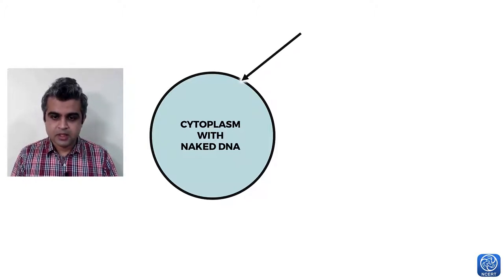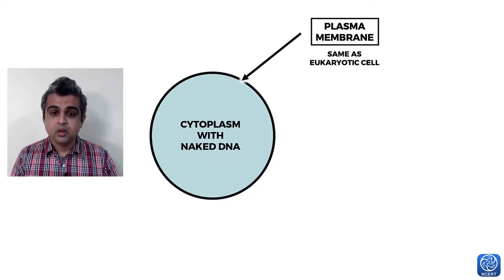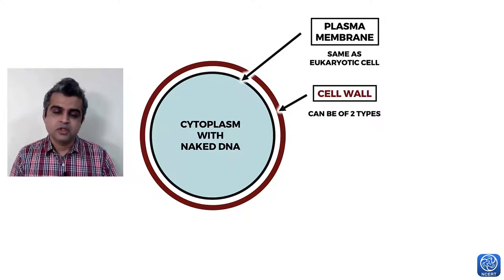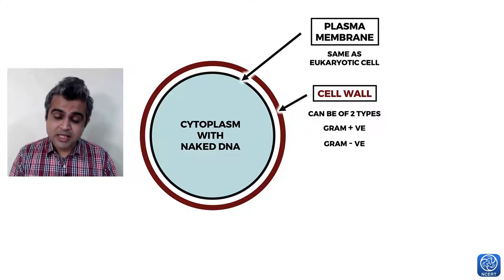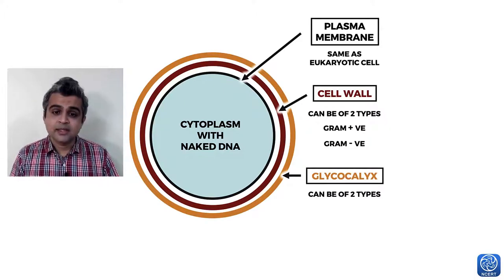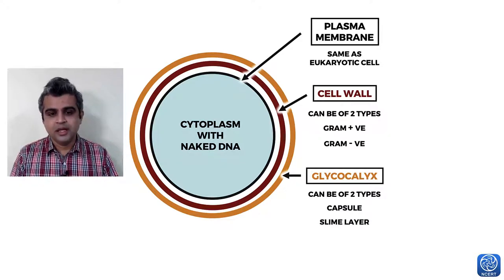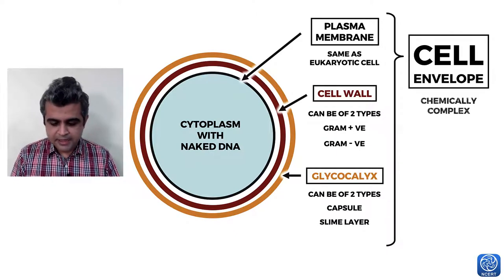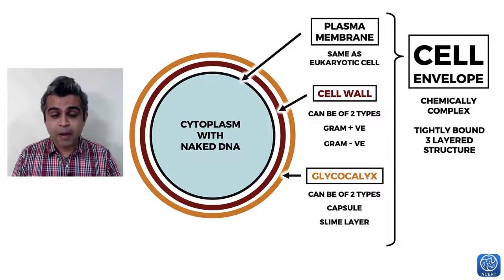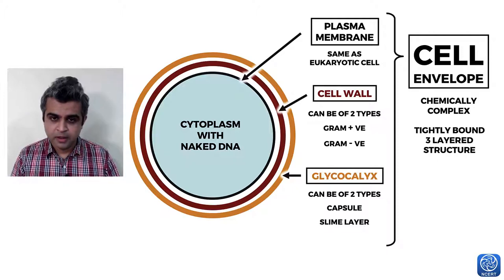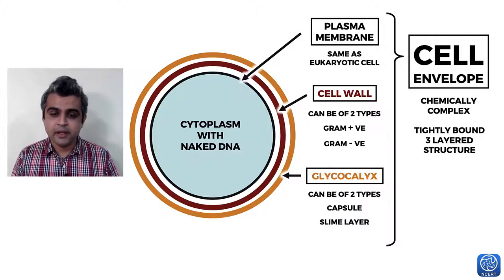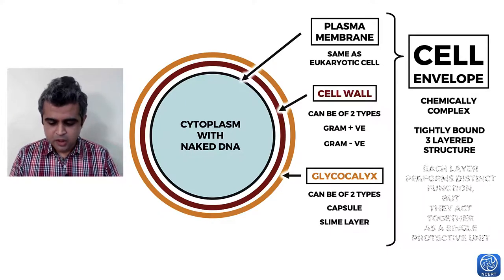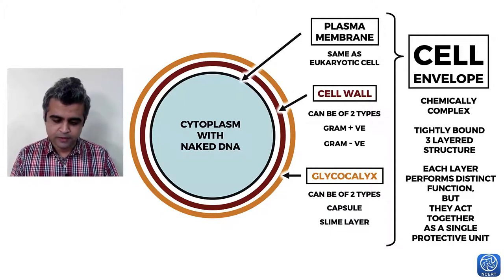Outside the plasma membrane is the cell wall, which can be gram-positive or gram-negative. Outside that there may be a glycocalyx, which can be either a rigid capsule or a loosely attached slime layer. Together these three — plasma membrane, cell wall, and glycocalyx — are called the cell envelope, a chemically complex layer of tightly bound components that act as a single protective unit.